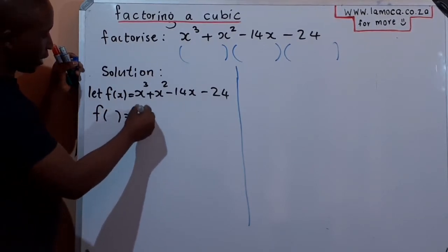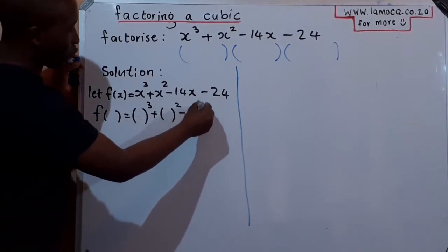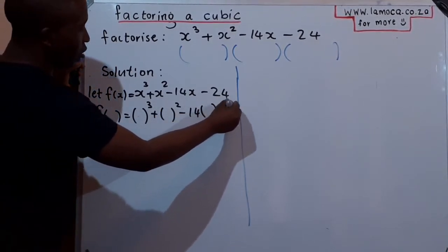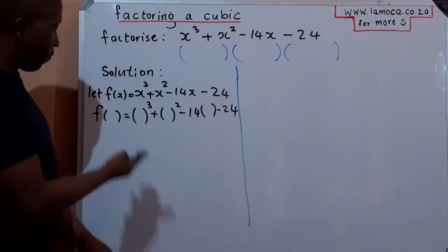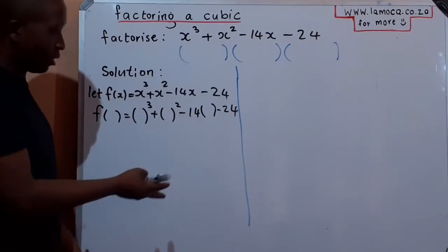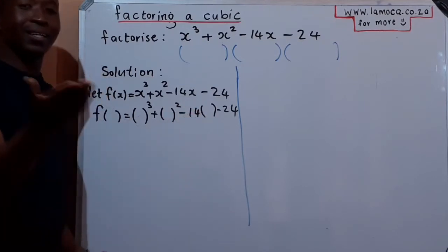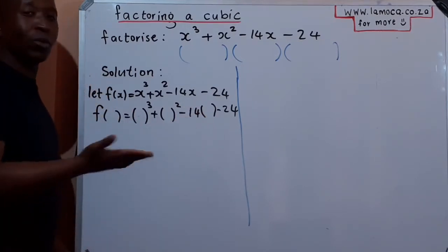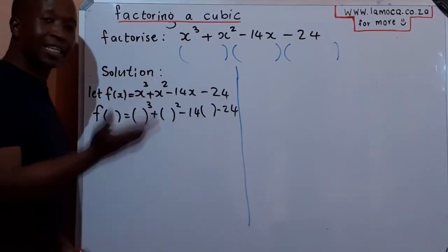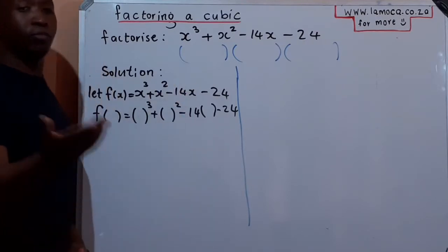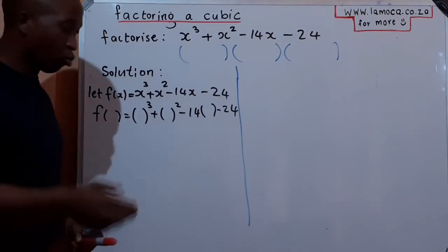We look for an x value to substitute and get an answer of zero, because that's what the factor remainder theorem requires — we're looking for a root where the remainder is zero. You start by substituting 1; if that doesn't work, try −1, then 2, then −2, until you find a value that produces zero. In this question, minus three is going to work.